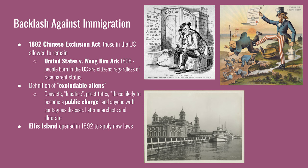Legislation in this time period begins to define excludable aliens — immigrants who would not be allowed into the United States — fueled by nativist sentiment of the late 19th century. Immigration laws are passed in 1882 and 1897, with more added in 1917, 1922, and 1924. The earliest excludable aliens are convicts, lunatics, prostitutes, those likely to become a public charge, or anyone with contagious diseases. Later added to the list are anarchists and anyone unable to pass a literacy test.